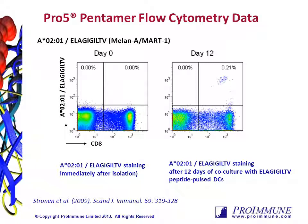Here is an example of the sort of staining you can expect to see from pentamers, using the A0201 Mart1 pentamer. We can see here that at Day 0 there were no specific CD8 T cells visible in the population, and following co-culture with dendritic cells pulsed with a peptide, there is a clear positive population, as shown in the top right quadrant of the Day 12 plot.